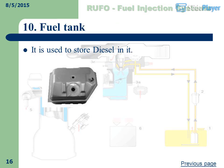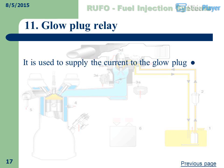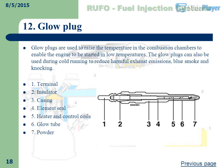Fuel Tank: It is used to store diesel. Glow Plug Relay: It is used to supply current to the glow plug.